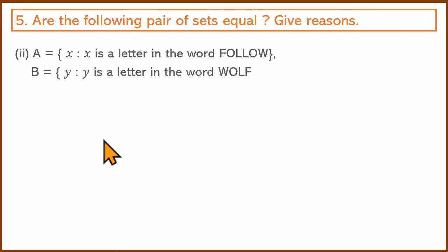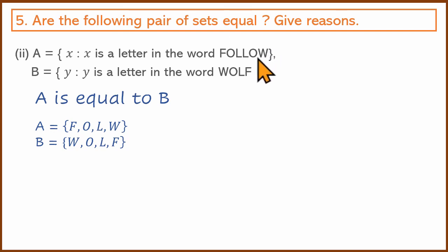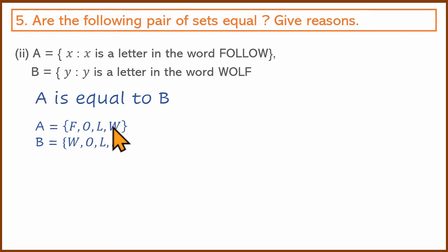Second one: X = letters in the word 'follow', Y = letters in the word 'wolf'. Letters in 'follow': F, O, L, L, O, W — repeated letters are counted once, so F, O, L, W. Letters in 'wolf': W, O, L, F — no repeats. So both sets are {F, O, L, W} — the sets are equal.